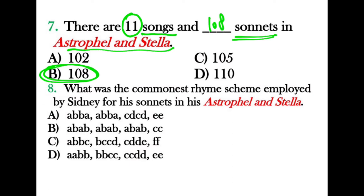Question eight: What was the commonest rhyming scheme employed by Sidney for his sonnets in Astrophel and Stella? The rhyming scheme he employed was ABBA, ABBA, then CDCD, and then AE — following the pattern of the Italian or Petrarchan sonnet form.